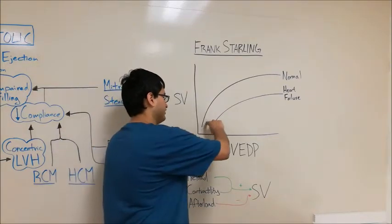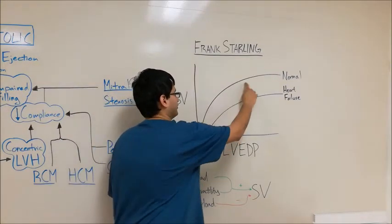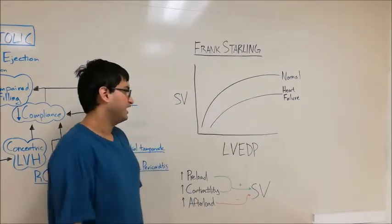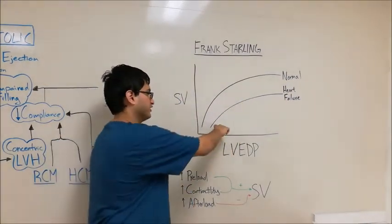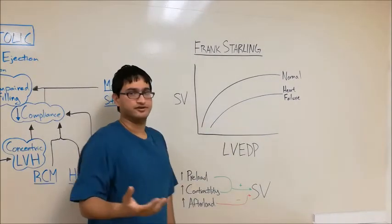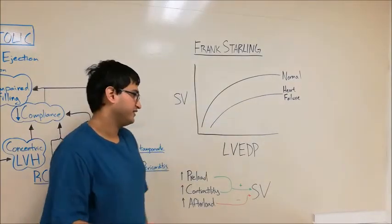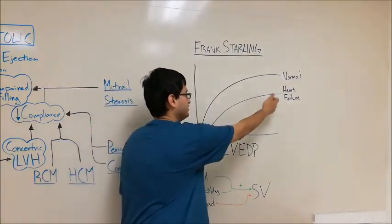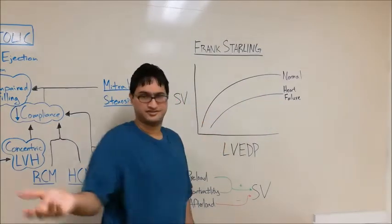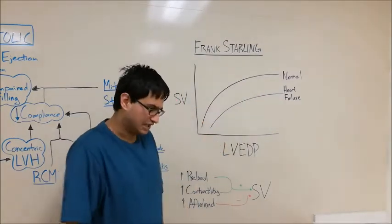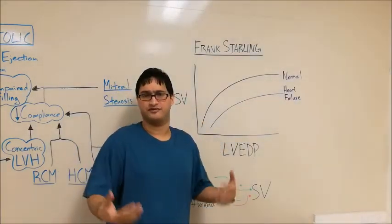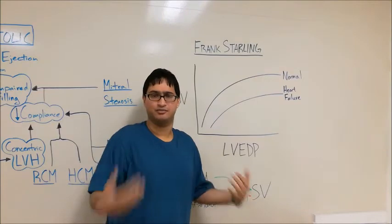The black curve represents the normal curve in a healthy adult, and the purple curve represents the heart failure curve. What this means is that at the same level of filling, you're pumping out less blood. So in heart failure, you have a decreased cardiac output.